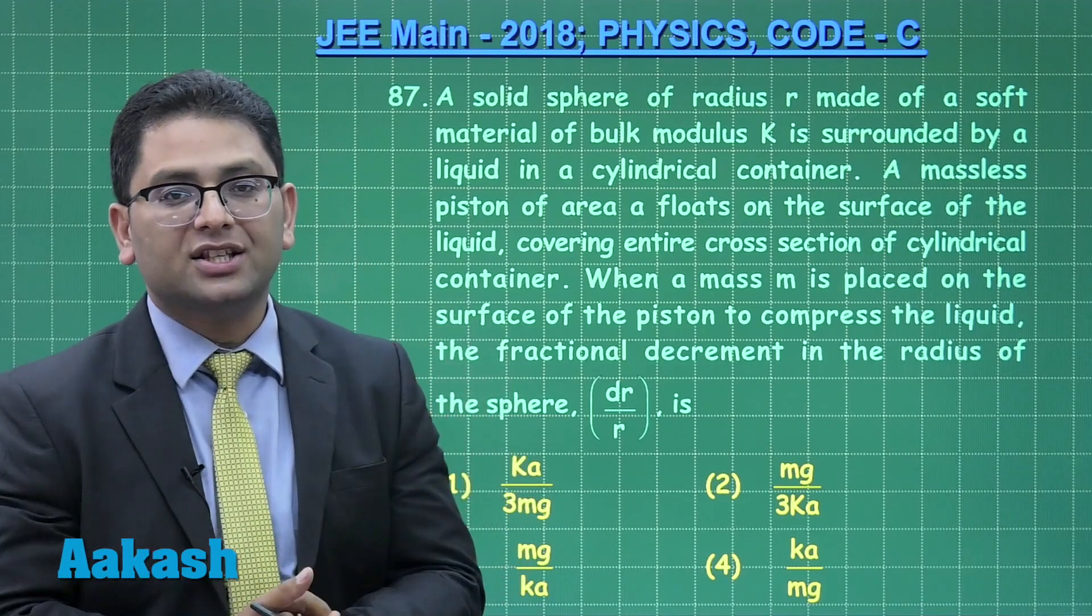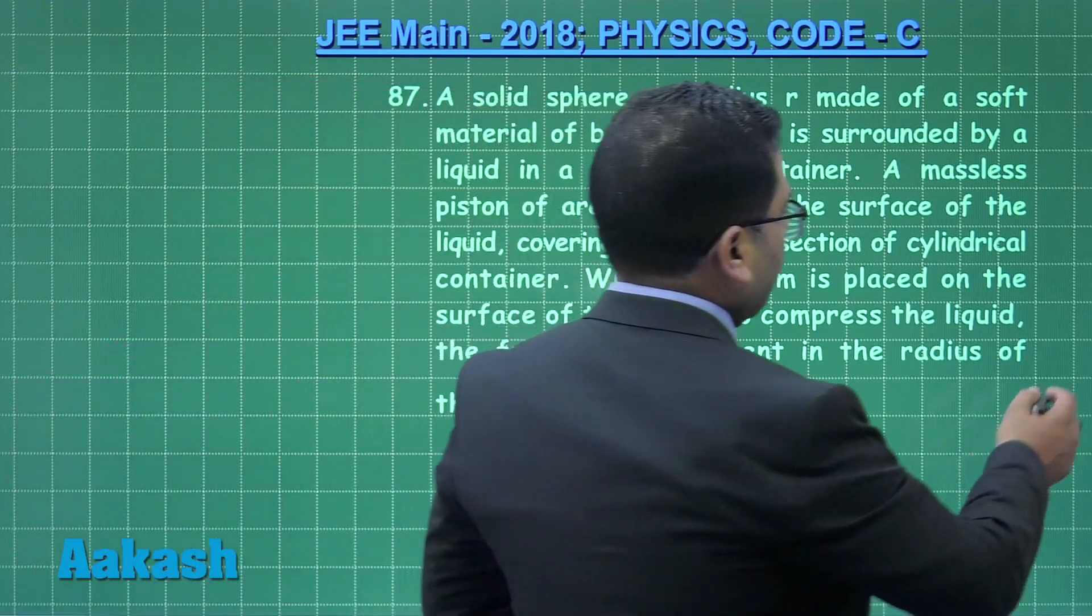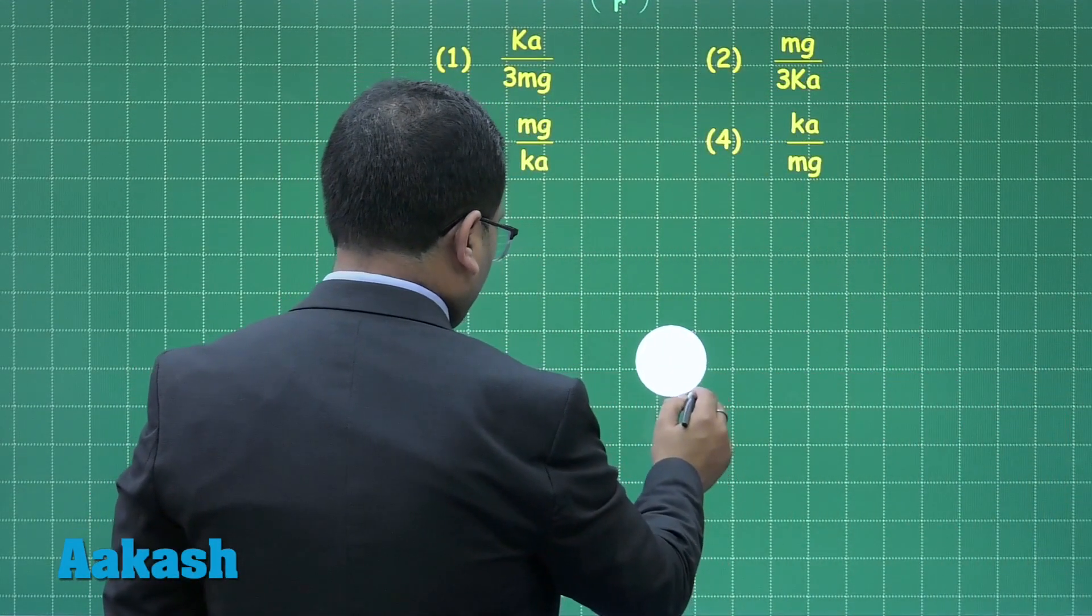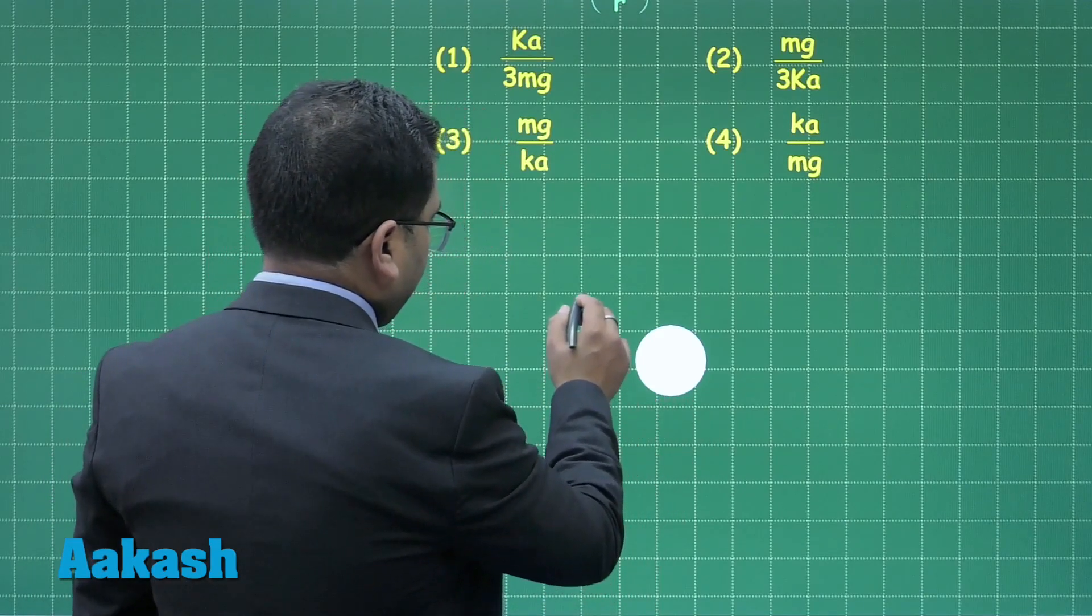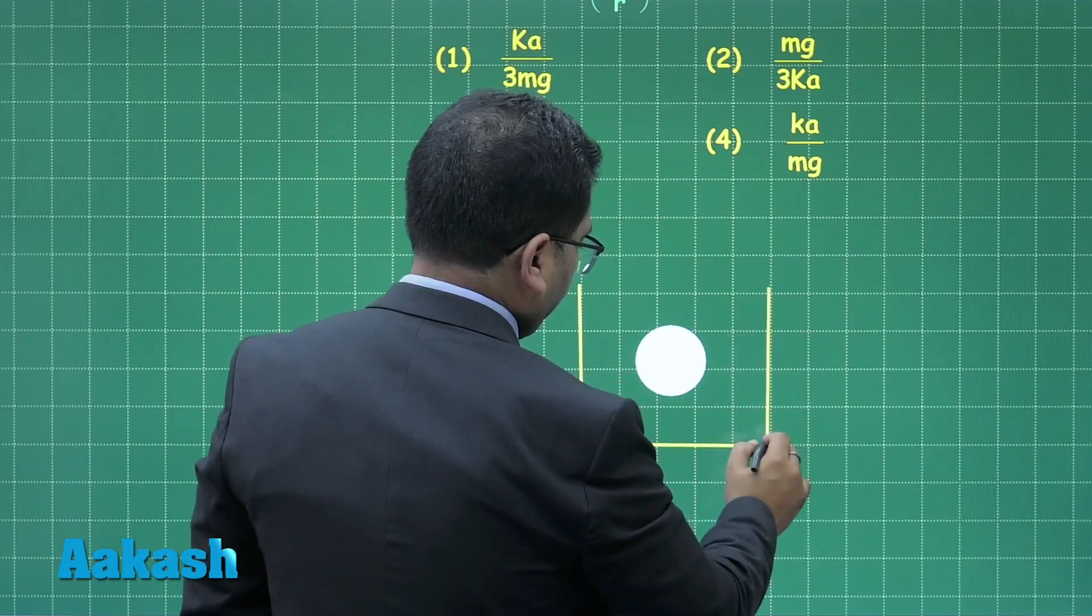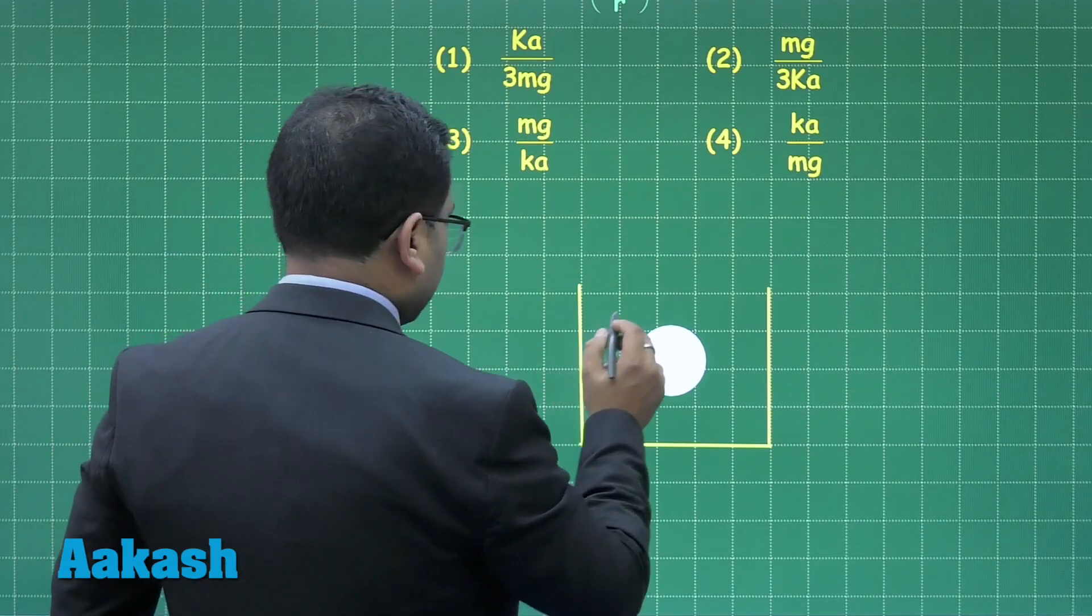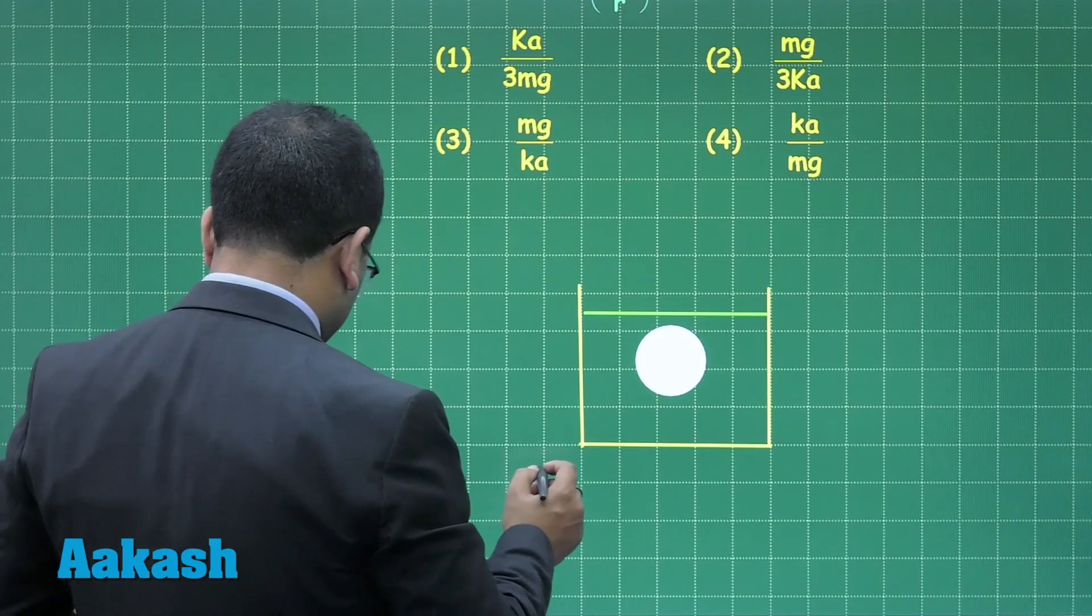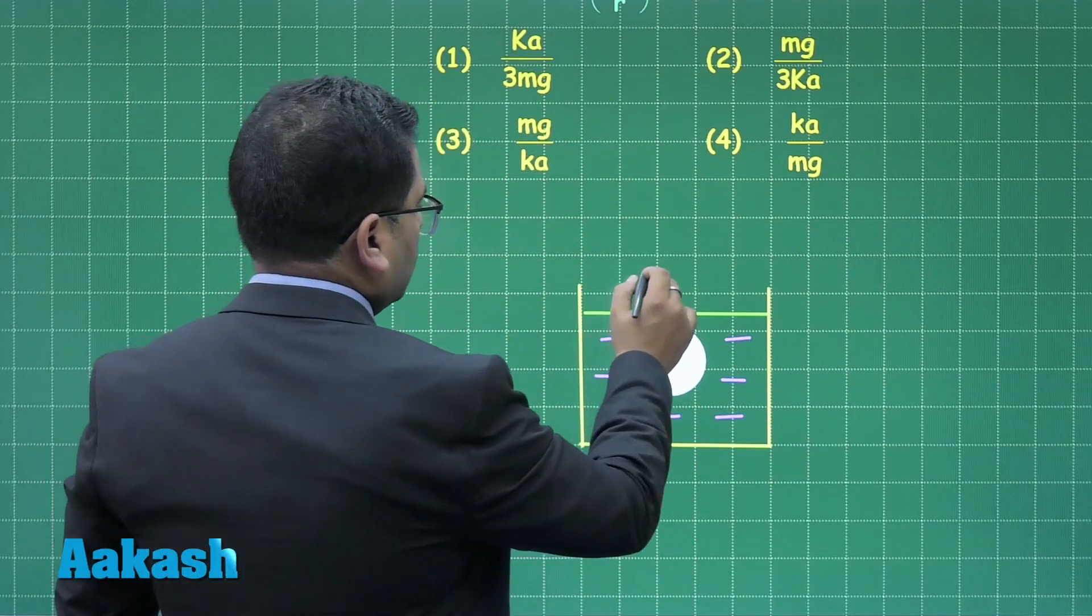Naturally when the mass compresses, the sphere would also be compressed and as a result of which there would be a change in radius. We need to calculate the fractional change in radius. The question is straightforward from properties of bulk matter. Let me show it in the form of a figure. This is the sphere which has been taken and here is the cylinder. On top of that a piston has been kept. The piston is massless. Inside there is water or liquid. On top of this we have kept a mass.